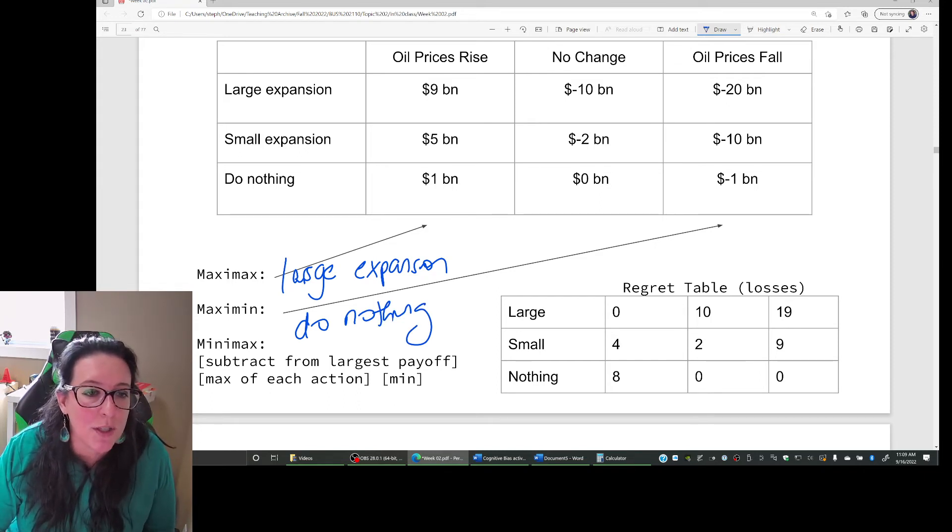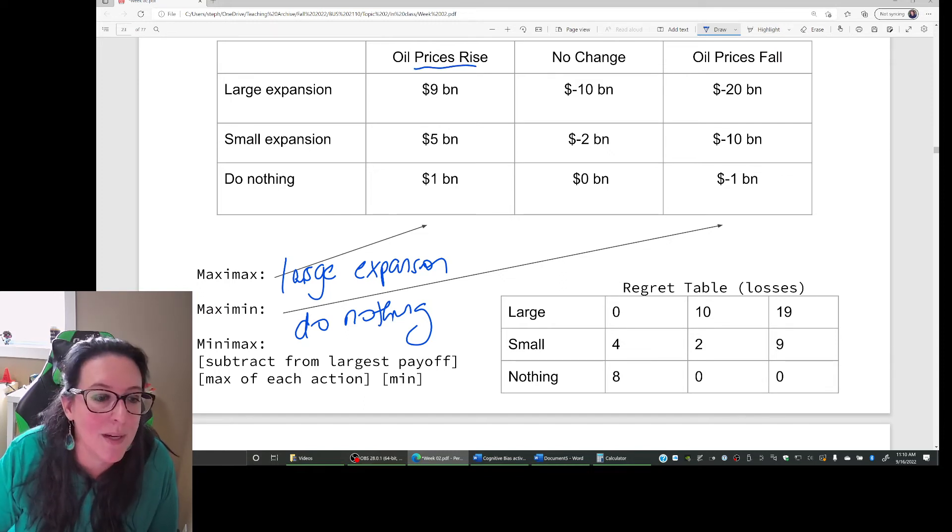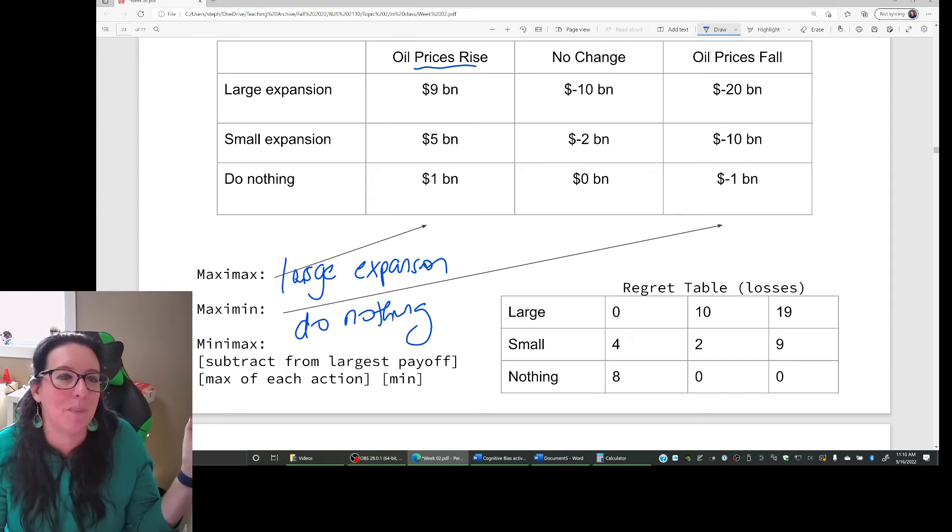Okay. The third approach, the MiniMax, requires us to build a regret table or a table of our losses. So to do the MiniMax approach, we are going to be risk neutral. So we are not going to assume a pessimistic outcome. We're not going to assume a negative outcome. We're going to consider all of them.